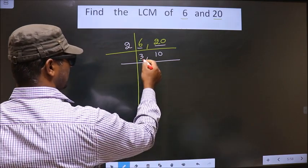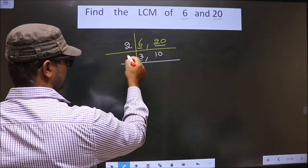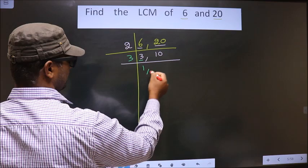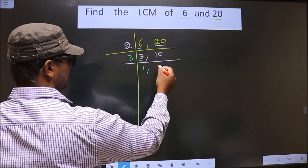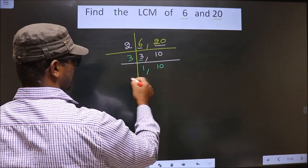Now, here we have 3. 3 is a prime number, so we take 3 and 1. 10 is not divisible by 3, so 10 you write as it is.